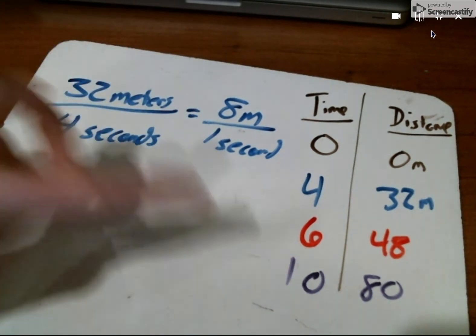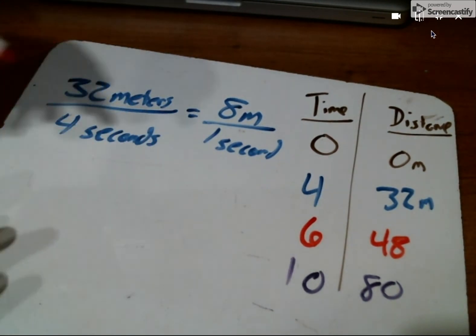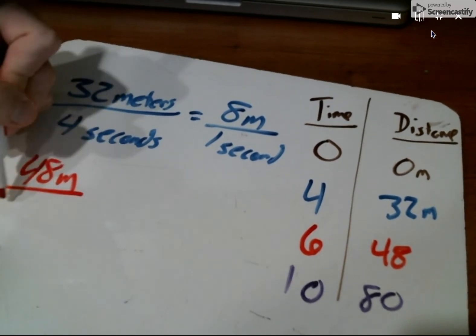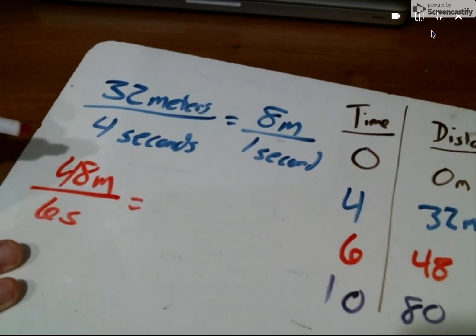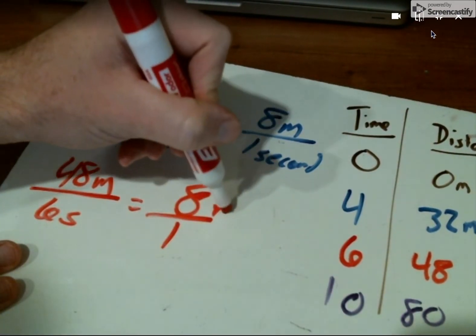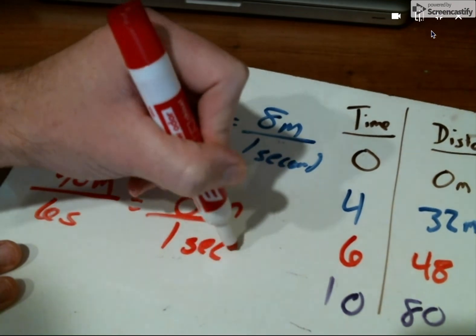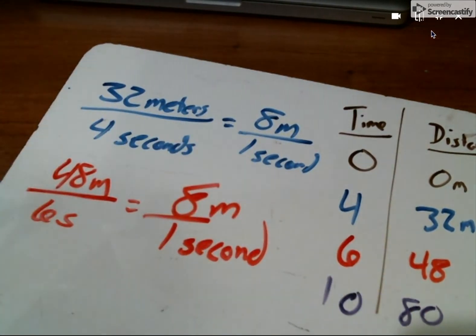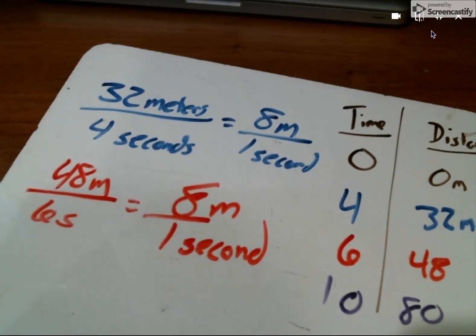We'd see the same thing with the red and the purple point. The red data point, if we did 48 meters per every six seconds, that would still be 48 divided by six, which works out to eight over one, or eight meters every one second again. And the same thing if you took 80 and divided by 10, you again would get eight over one.